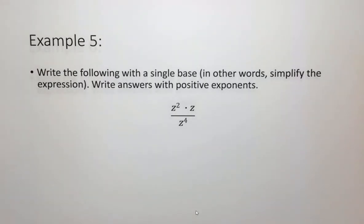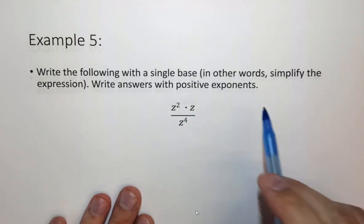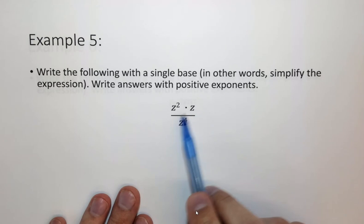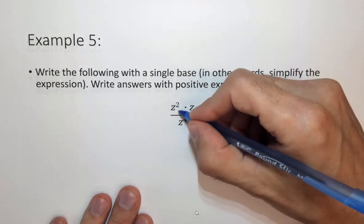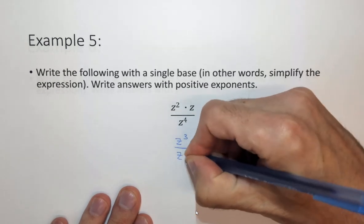Let's look at this example. Here we have both multiplying and dividing going on at the same time. So let's multiply the tops first. This is z to the 2 plus 1 or z cubed over z to the fourth.